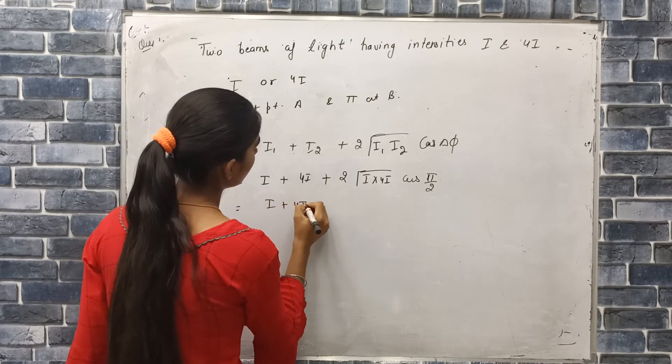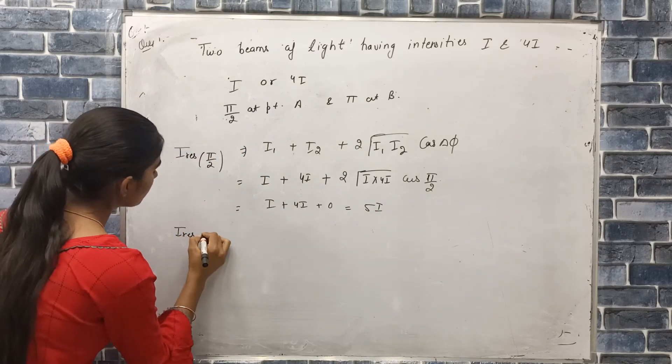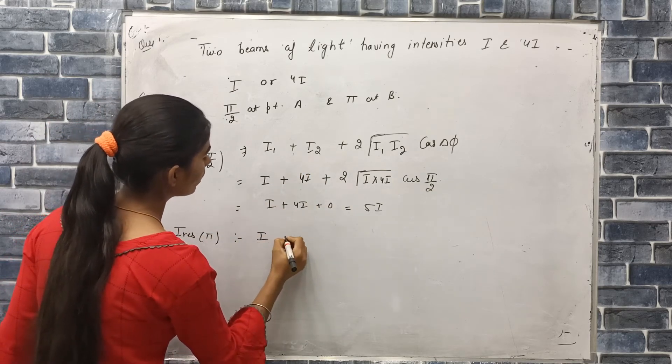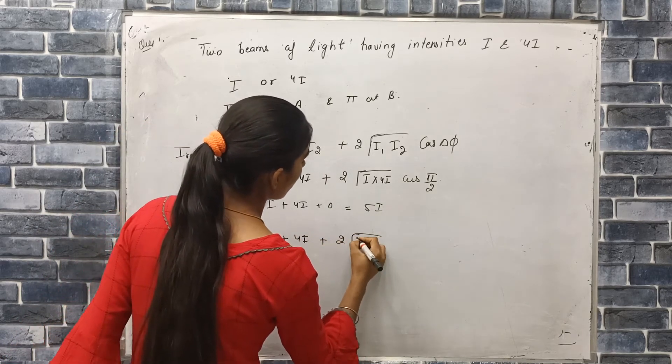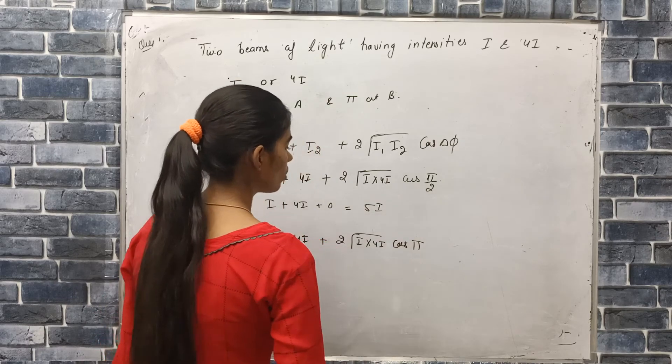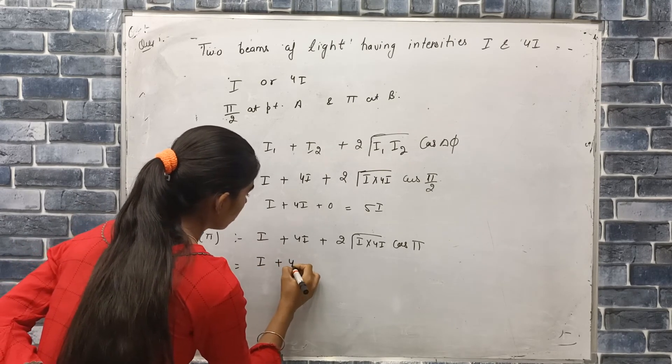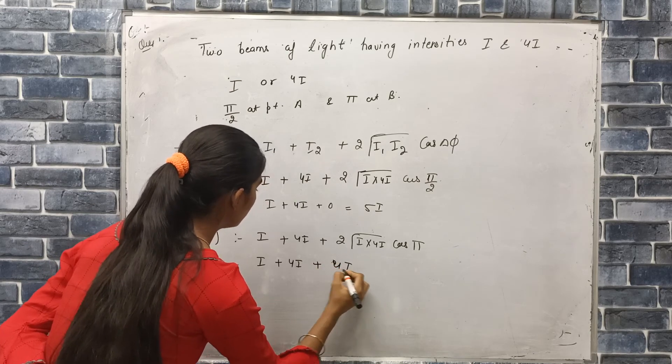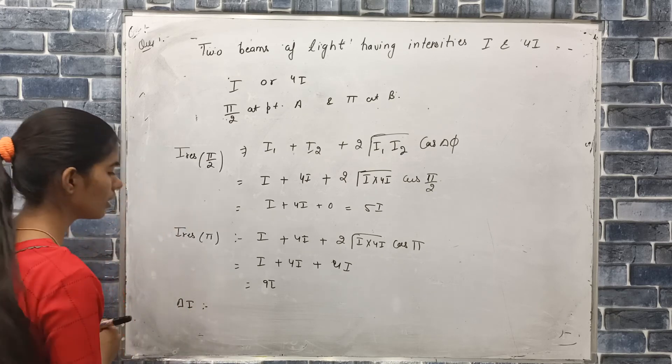So I plus 4I plus 0, I resultant is 5I. For point B, I plus 4I plus 2 root I into 4I cos π. Cos π equals negative 1, so I plus 4I minus 4I equals I.